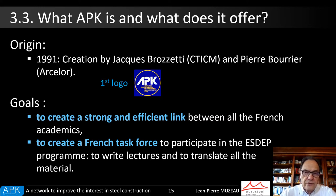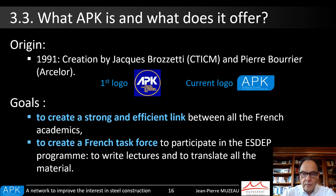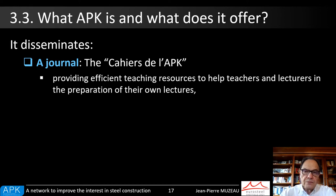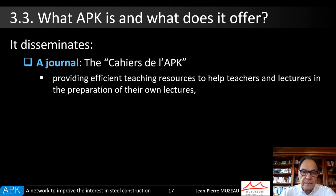This is the first APK logo and the current one. What is proposed by the APK? First, a journal whose name is Cahiers de l'APK. It provides documents and PowerPoint presentations, worked examples, case studies, drawings, slides, and videos about real projects. Obviously, as it is a French network, most of the resources are provided in French.